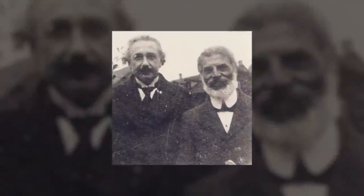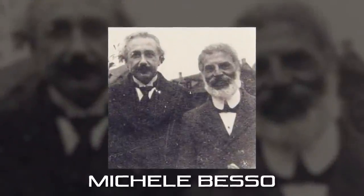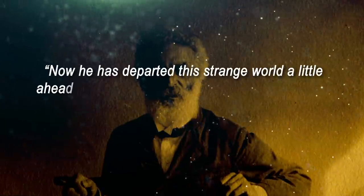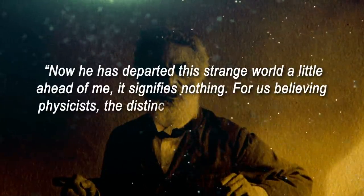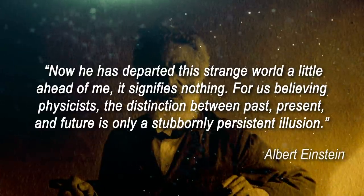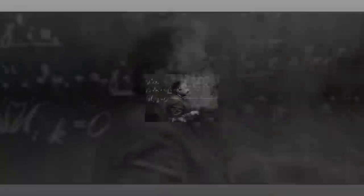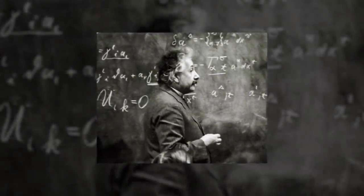Einstein himself wrote to his friend Michele Besso's family on his passing: 'Now he has departed the strange world a little ahead of me. It signifies nothing. For us believing physicists, the distinction between past, present and future is only a stubbornly persistent illusion.' Many physicists argue that Einstein's statement was not merely an attempt at consolation.